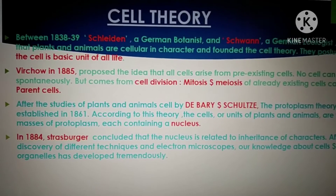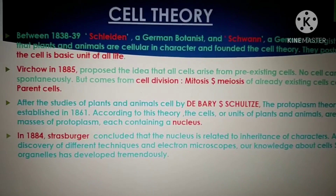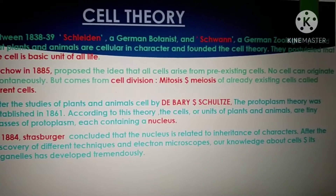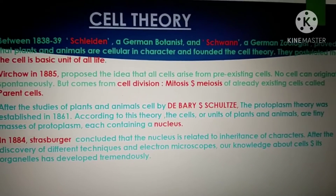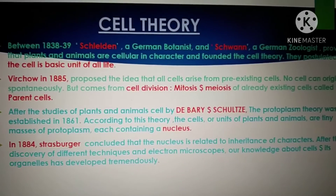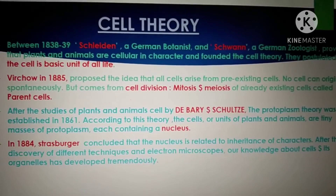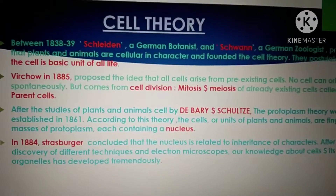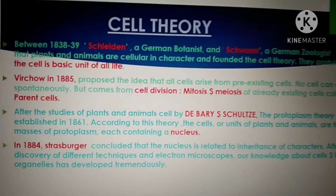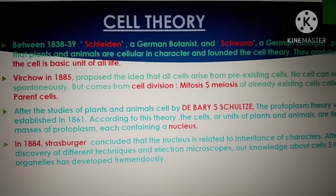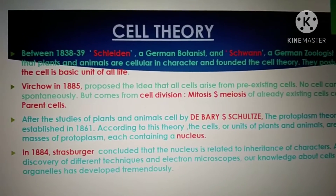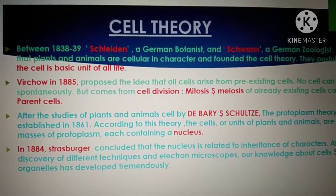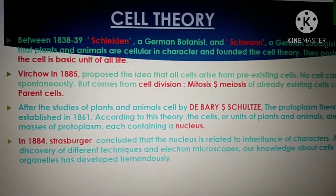Schleiden, a German botanist, and Schwann, a German zoologist, proved that plants and animals are cellular in character — meaning they are made up of cells. Together they founded the cell theory, postulating that the cell is the basic unit of life.